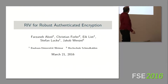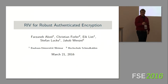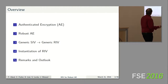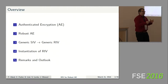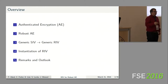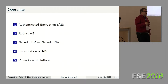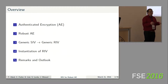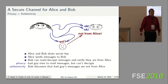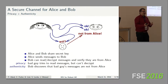This talk is about authenticated encryption and what we mean by robust authenticated encryption. I will look at the generic transition from the SIV mode of operation to the RIV mode of operation, talk about the specifics of our instantiation of RIV, and conclude with some remarks and an outlook.